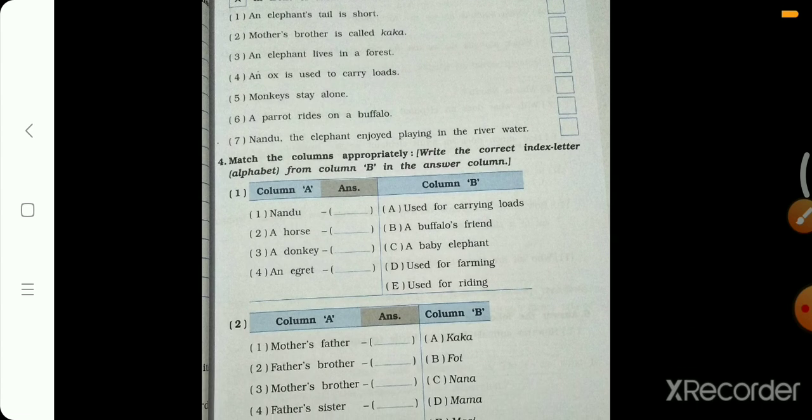Match the following. Here two columns are there. Column A has some name of animals. And column B has some statements. So read the first statement. Used for carrying loads. Chalo, loads carry karne ke liye kaunse animals use hote hain? Donkey.